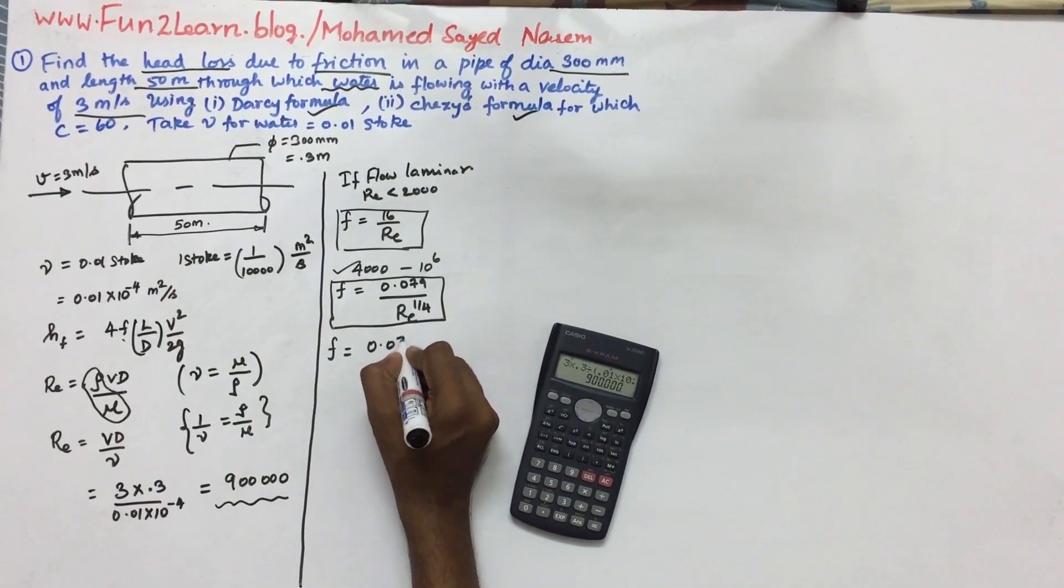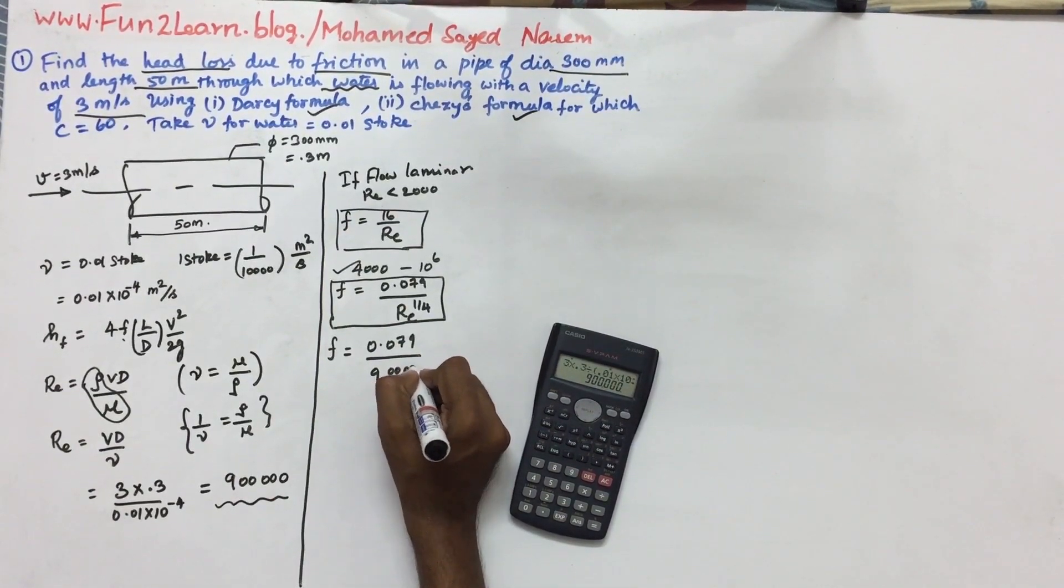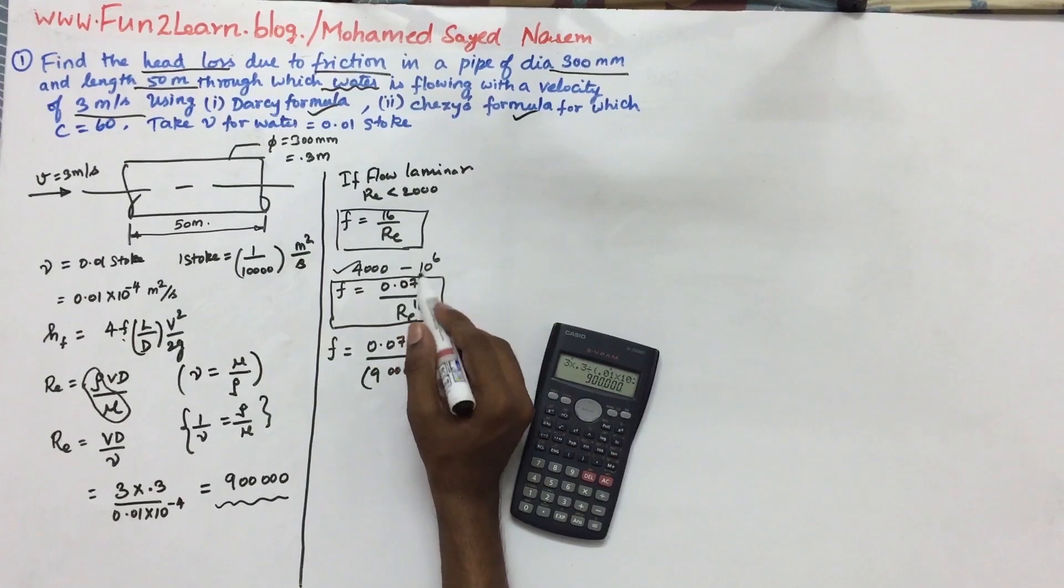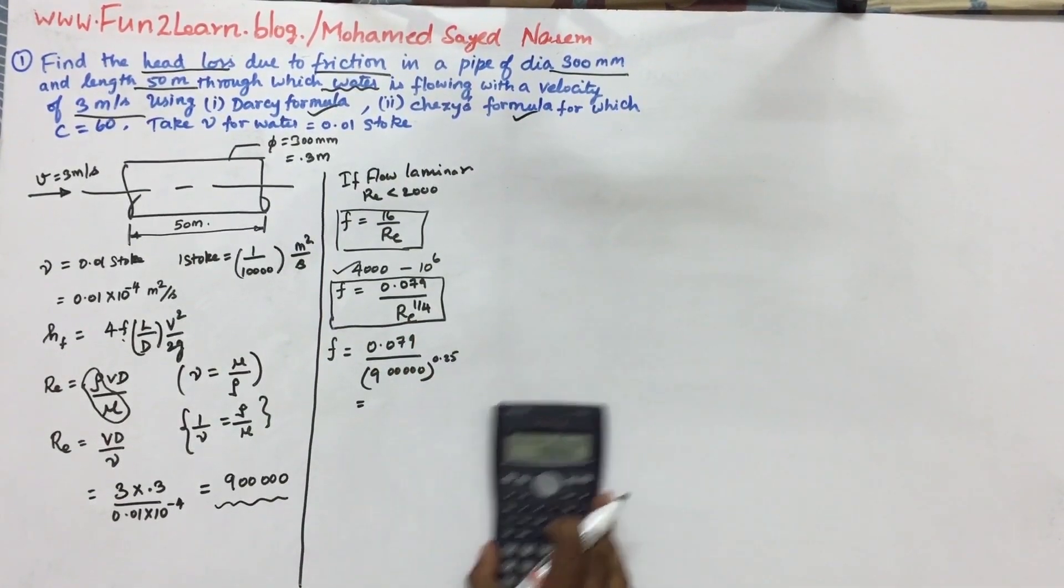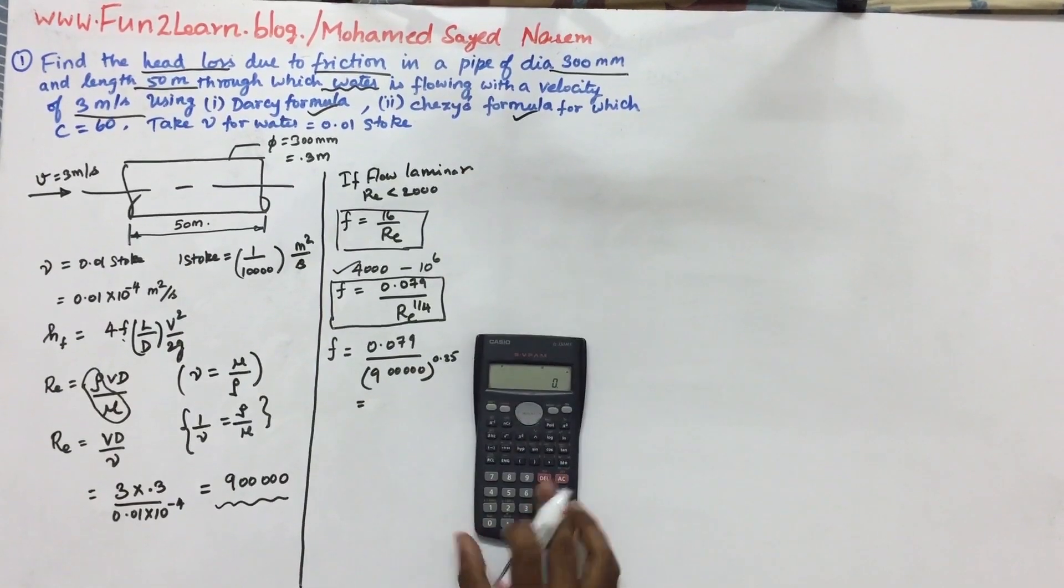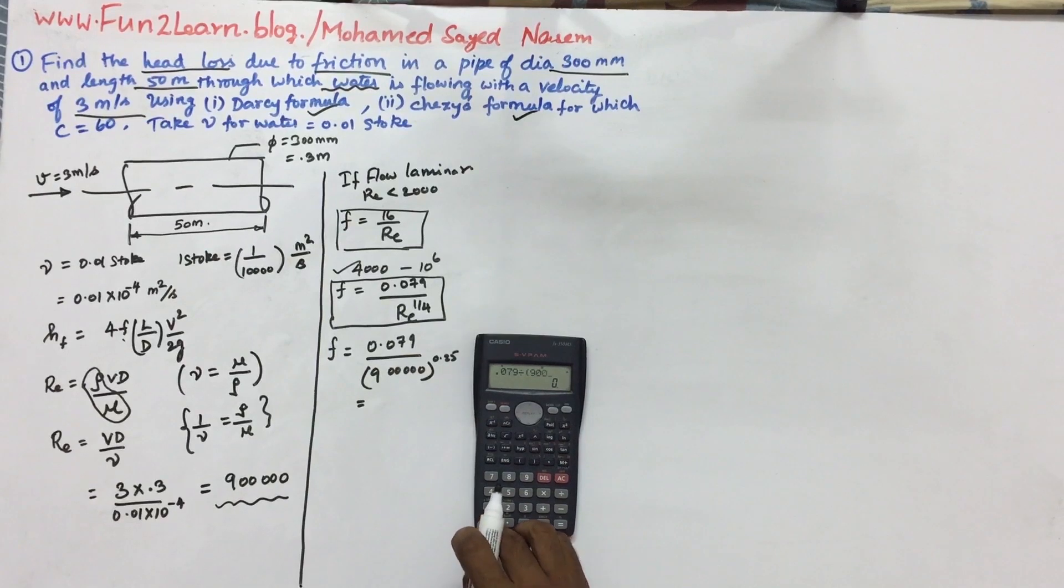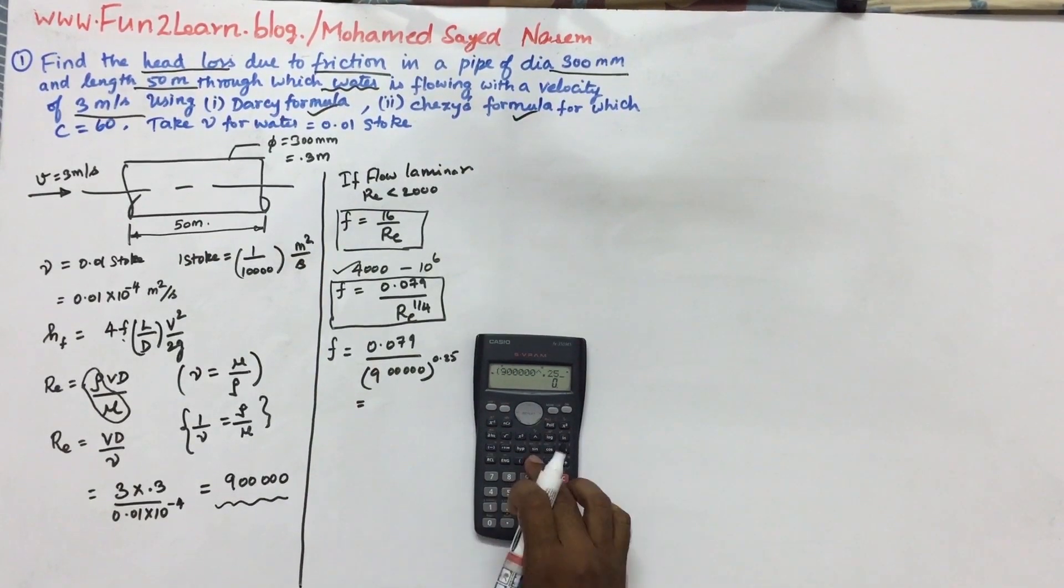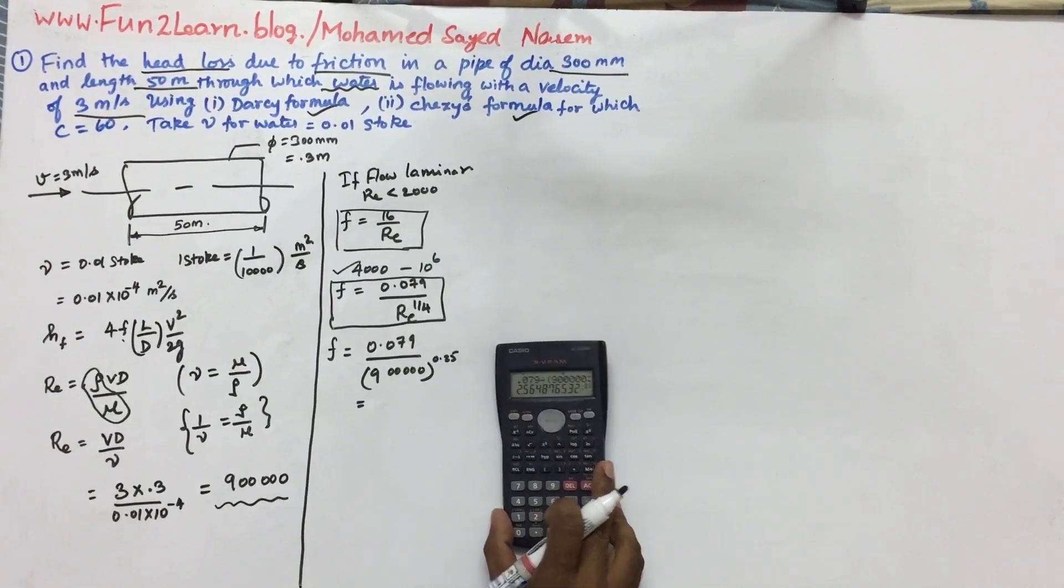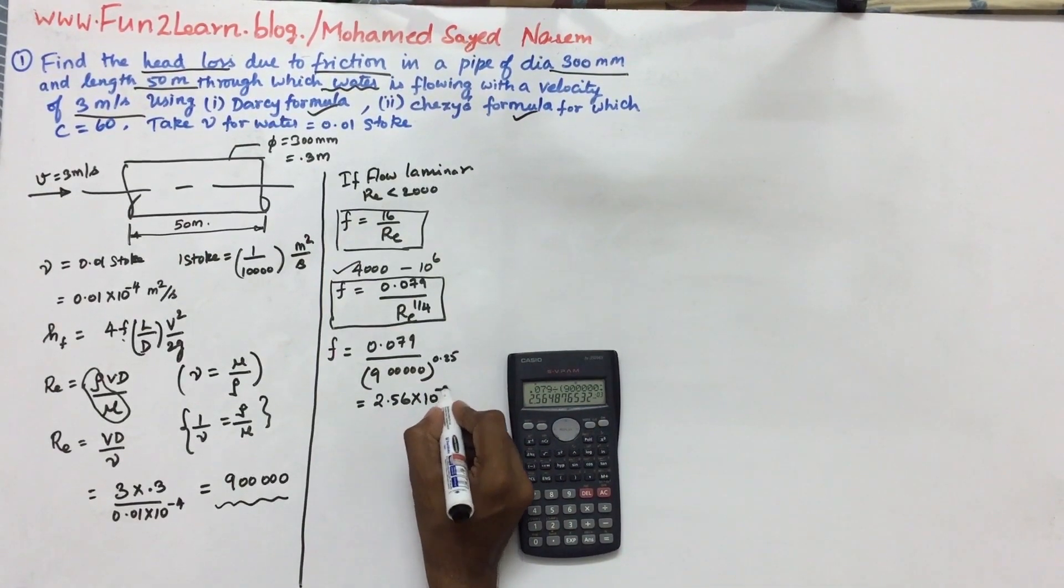Coefficient of friction is 0.079 divided by RE power 1 by 4. The coefficient of friction is a function of Reynolds number in the turbulent range. So f value first: f equals 0.079 divided by 90,000 power 0.25. So f value equals 2.56 into 10 power minus 3.